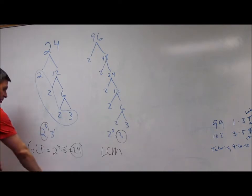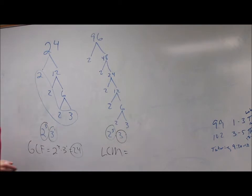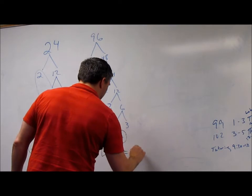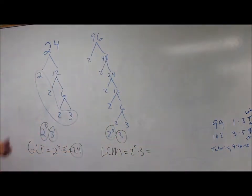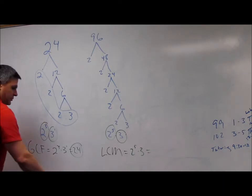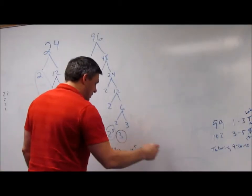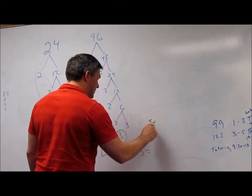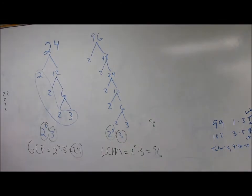So now, we want to go with the LCM is 2 to the fifth and 3 to the one, which is 2 to the fifth times 3 to the one. 2 to the fifth is 32, times 3, which is 30 times 3, which is 90 plus 6, so it's 96. So we have 96 is your LCM, or 32 times 3.